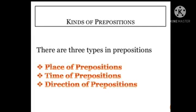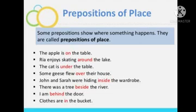The three major varieties are: prepositions of place, prepositions of time, and prepositions of direction. The first one we are focusing on is prepositions of place. Some prepositions show where something happens and they are called prepositions of place. For example, 'The apple is on the table' — here 'on' is the preposition of place.